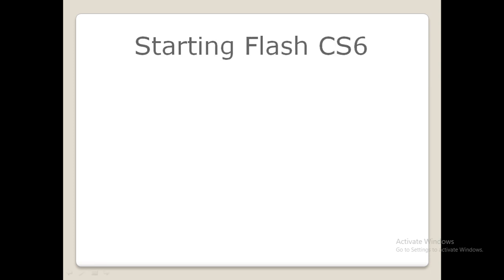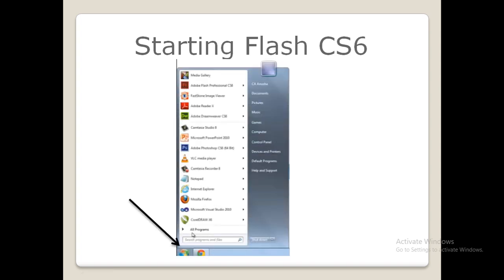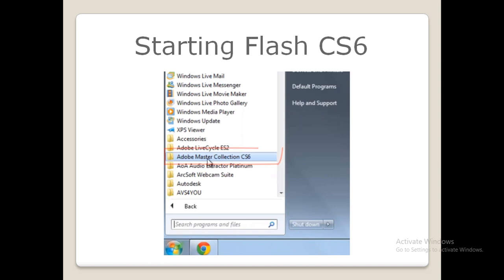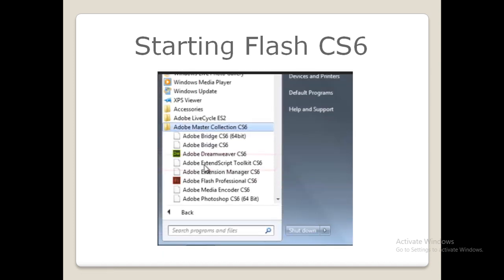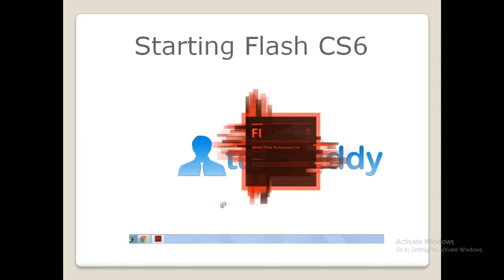Now let us see how to start Flash CS6. To start Flash, follow these steps. First, click on the Start button and select the All Programs option. When you click on All Programs, you will see Adobe Master Collection CS6 displayed on your screen. Next, click on Adobe Flash Professional CS6. As soon as you click on this, you will see the Adobe Flash Professional CS6 welcome screen appear on your monitor.